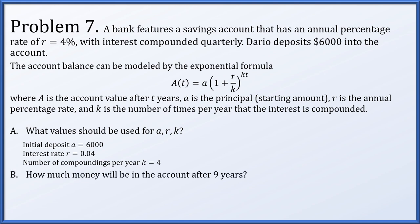How much money will be in the account after nine years? We set a to 6,000, r to 0.04, k to 4, and t equal to 9, then plug and chug. The value after nine years will be approximately $8,584.61.